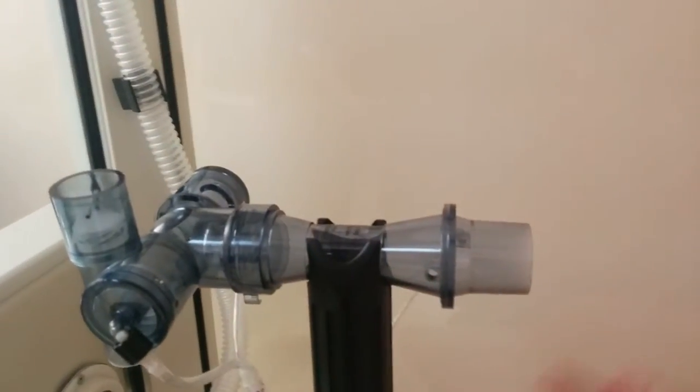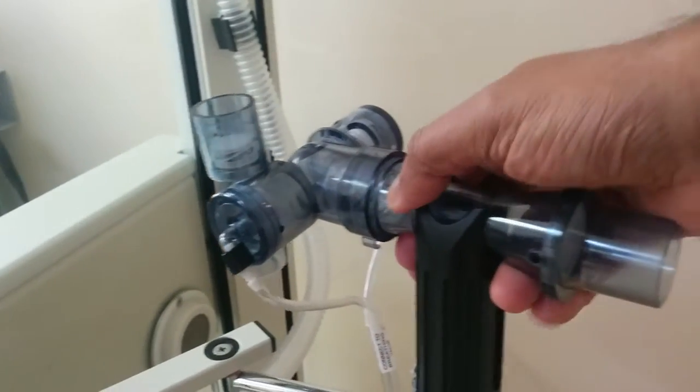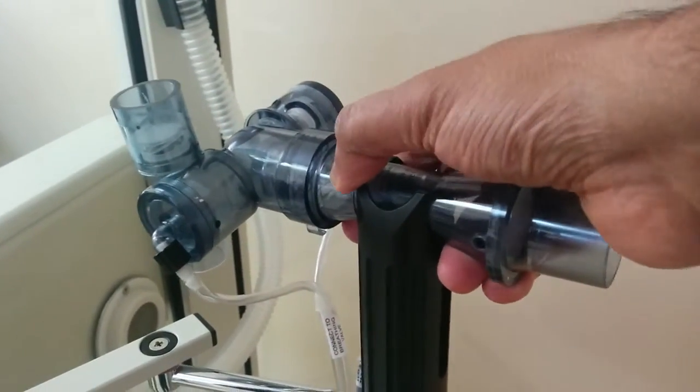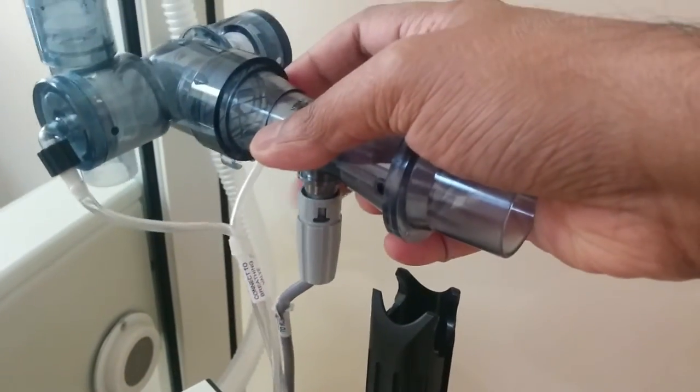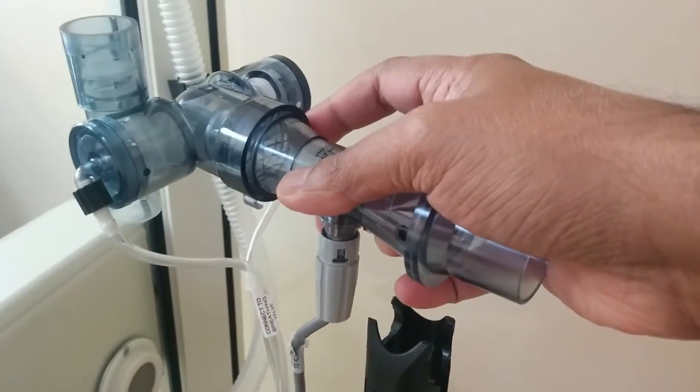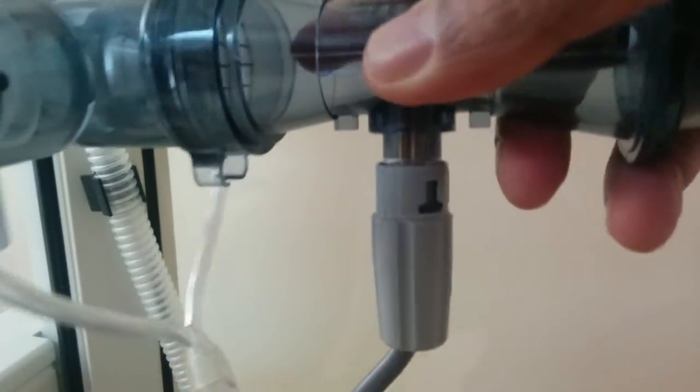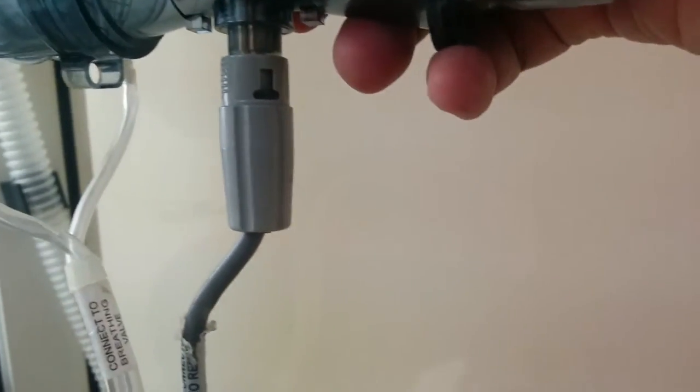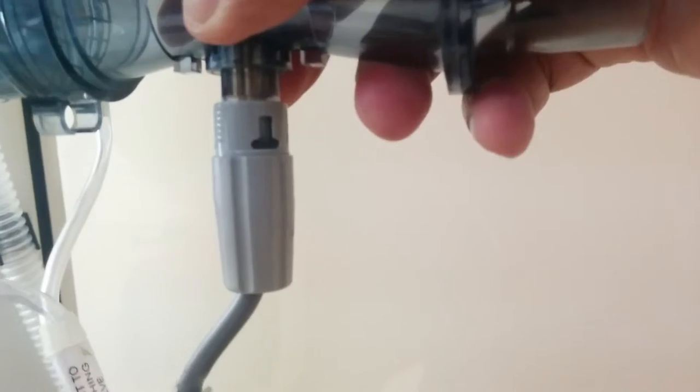You need to take off all these parts that are attached to the flow sensors and pull this out like this. You see this part here, this one has to be unplugged. How you do it is there are these words that say press.